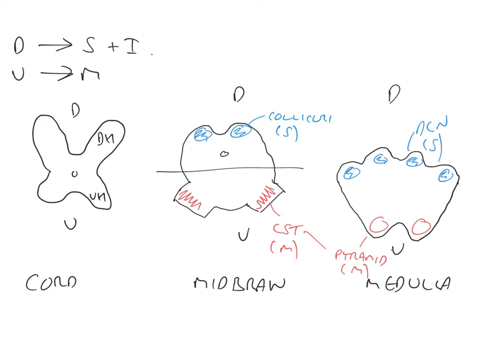So once again, in the medulla, there is a distinction between dorsal and ventral. On the dorsal side, we have structures which are sensory, derived from the roof plate. On the ventral side, structures which are motor, related to the floor plate. So it really does hold throughout the nervous system.